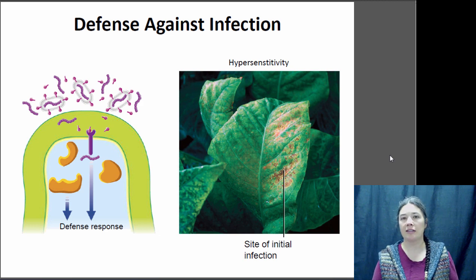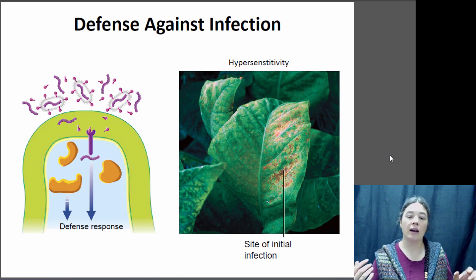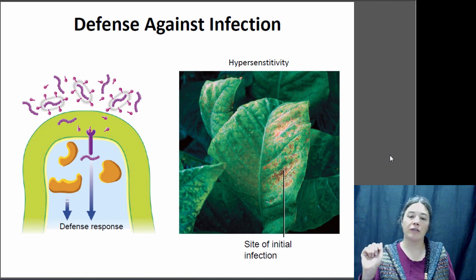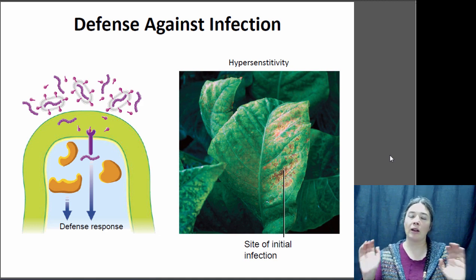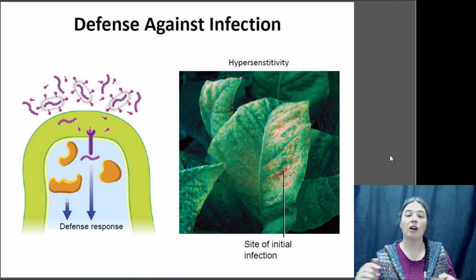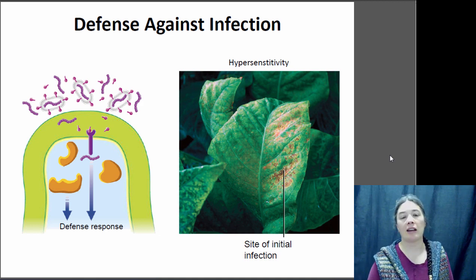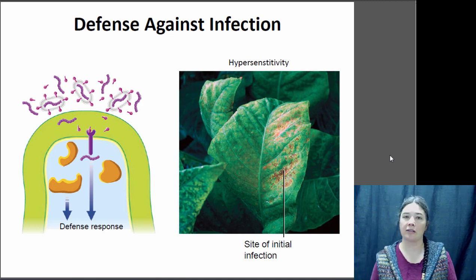One of these responses is called hypersensitivity. This is often a response to a viral infection — if the virus gets into some cells in one part of the plant, the plant will actually cut off all nutrients to that area and allow all the cells there to die. You get these little patches of dead tissue around the site of the initial infection, and that prevents the infection from spreading to the whole plant, allowing the rest of the plant to survive.